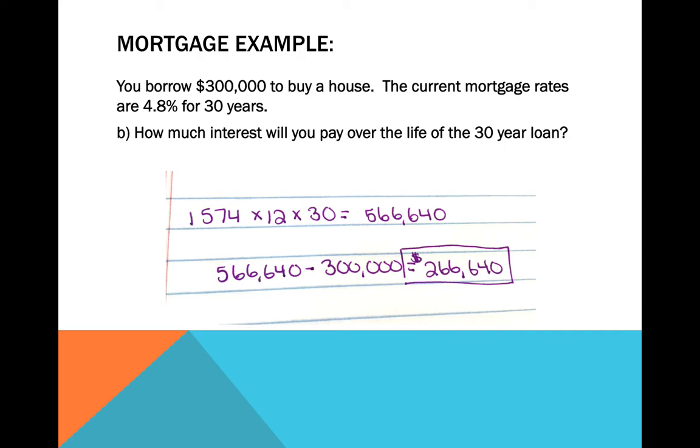So what I'm going to do is figure out the total amount of money I paid. So I paid $1,574 every month for 30 years. That's where I get my $1,574 times 12 times 30 to give me a total of $566,640. That's how much total I paid to the bank. The bank gave me $300,000, so I'm going to subtract that for my total, which means the interest or what the bank earned off of my loan gave me $266,640.